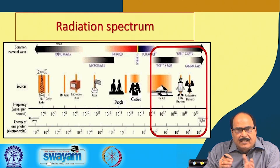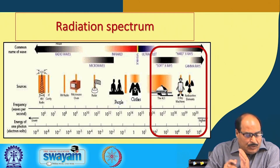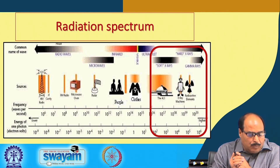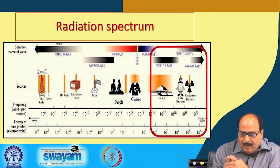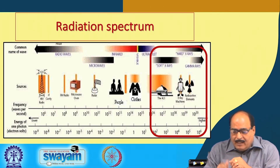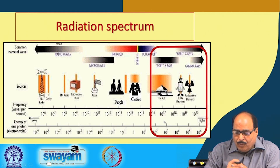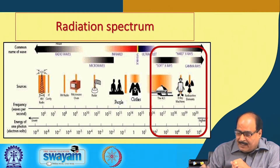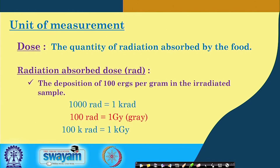In this slide you can see the radiation spectrum, which is normally presented in terms of frequency of waves per second or energy of one photon. Radiations used for food processing, like x-rays and gamma rays, are normally towards the higher frequency side, having 10 to the power of 16 or more waves per second. Regarding units of measurement, we define the dose of radiation received by food materials, as this is an important consideration in analyzing food irradiation processes — what amount of dose is required for a particular operation.